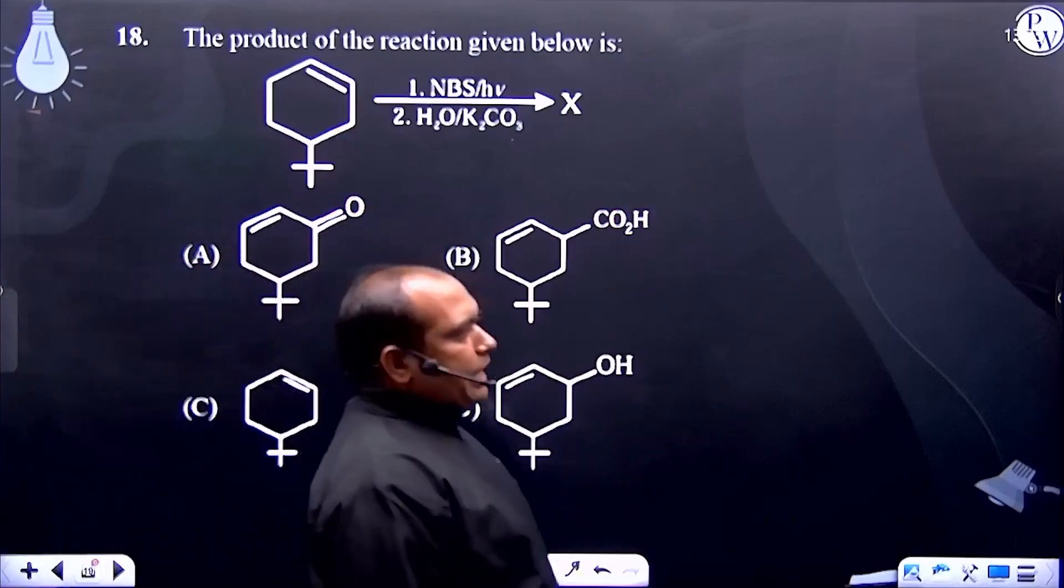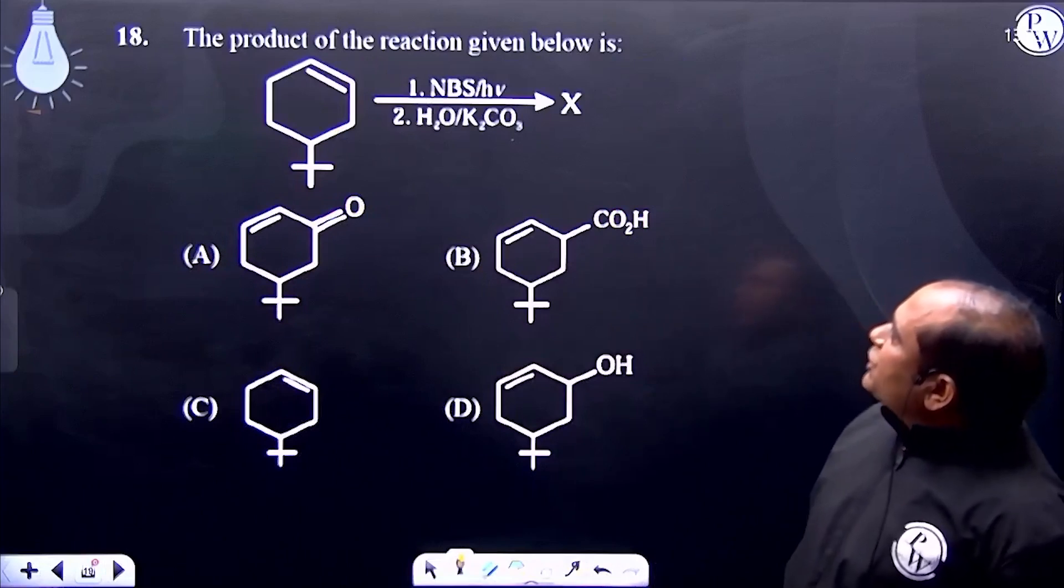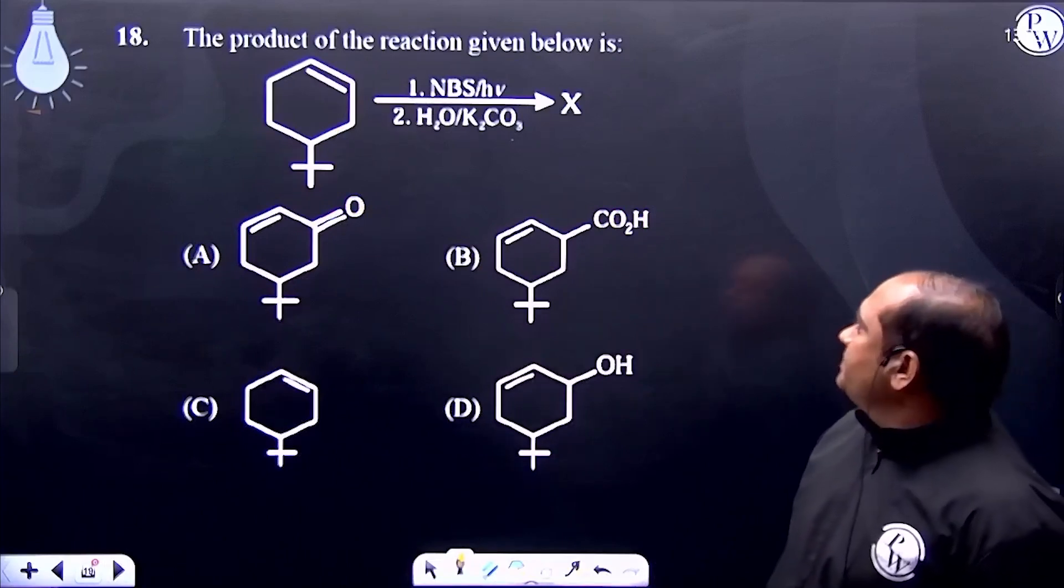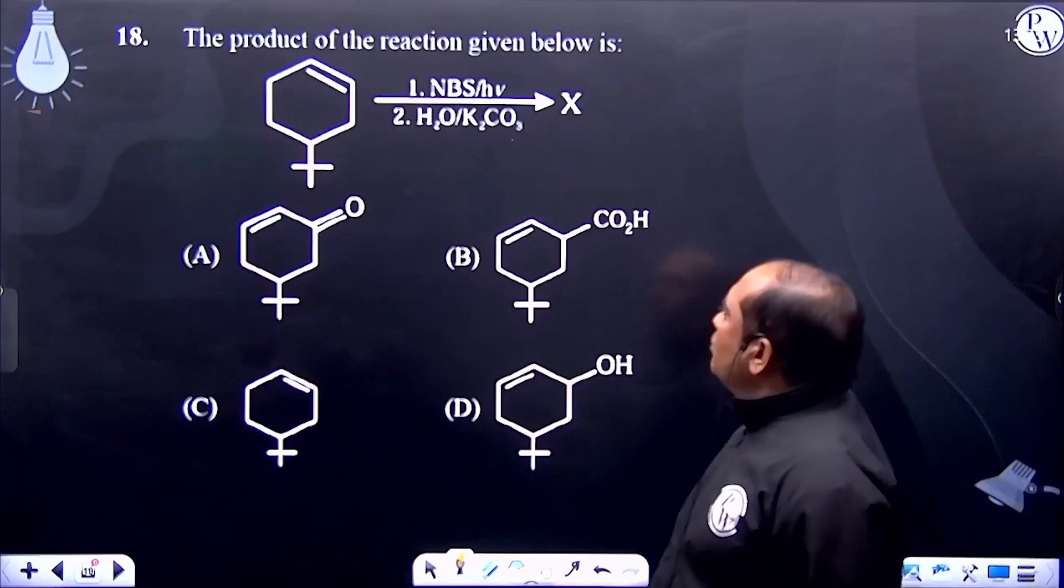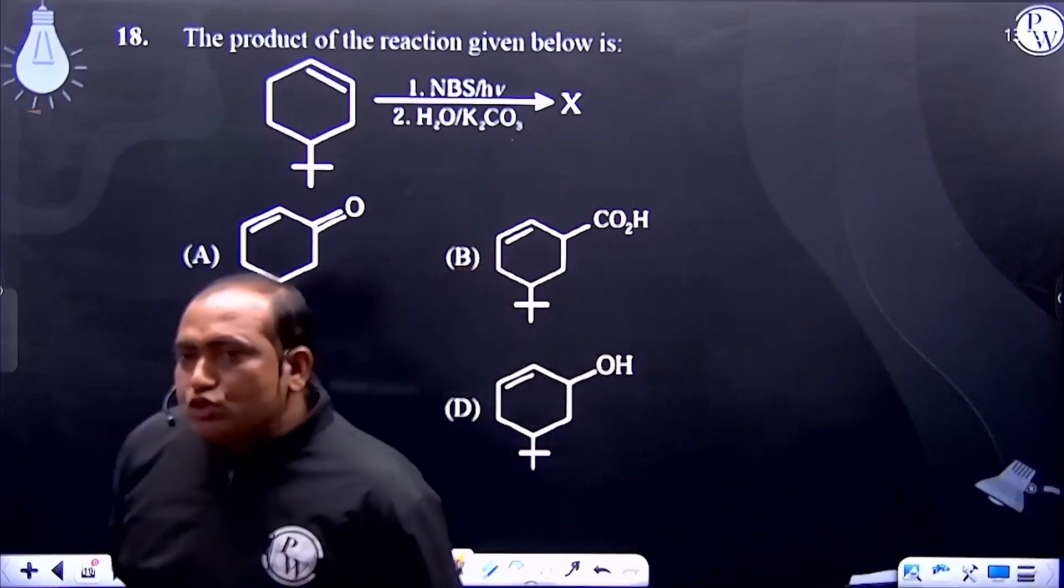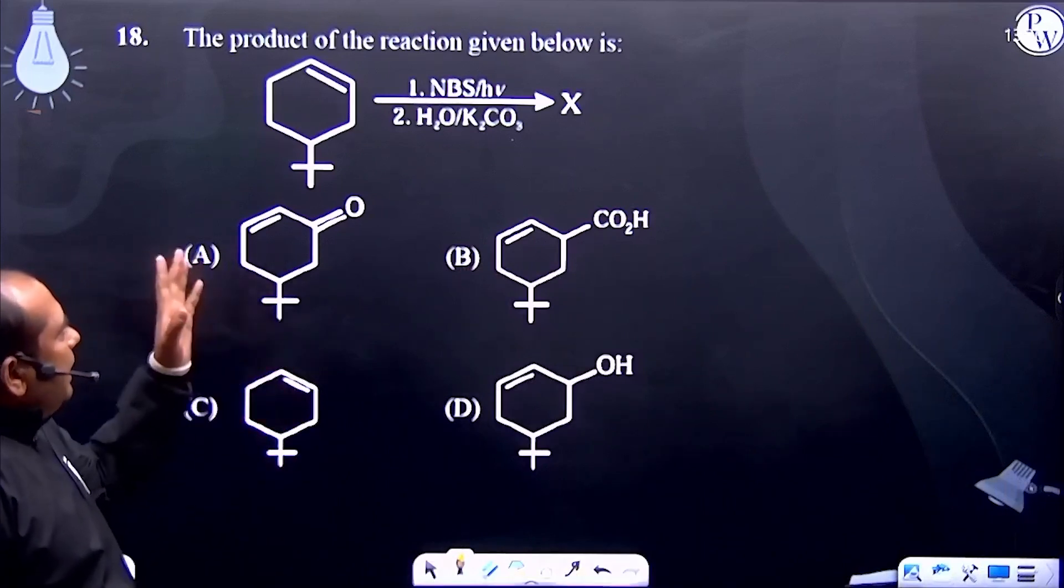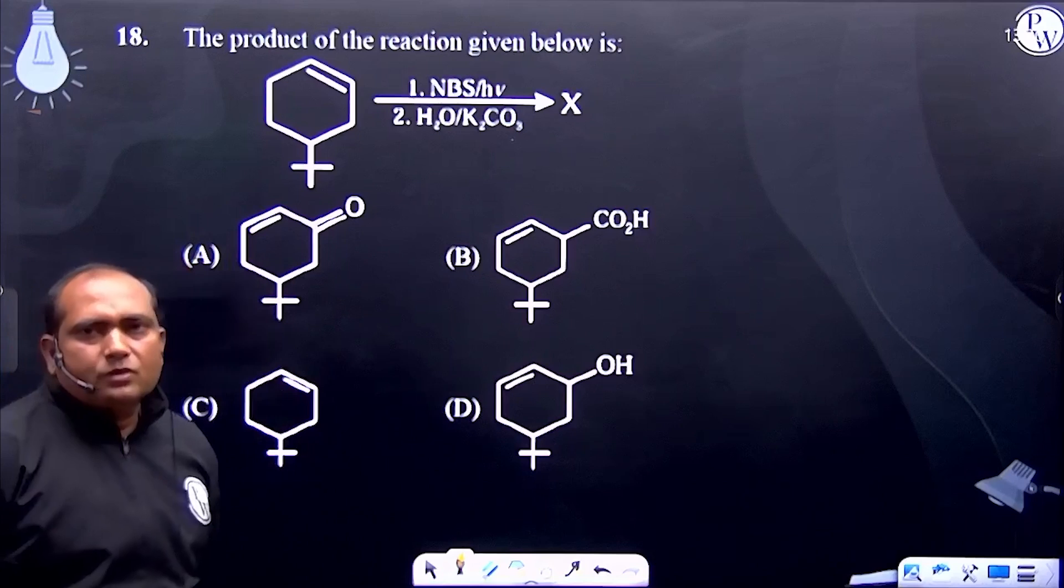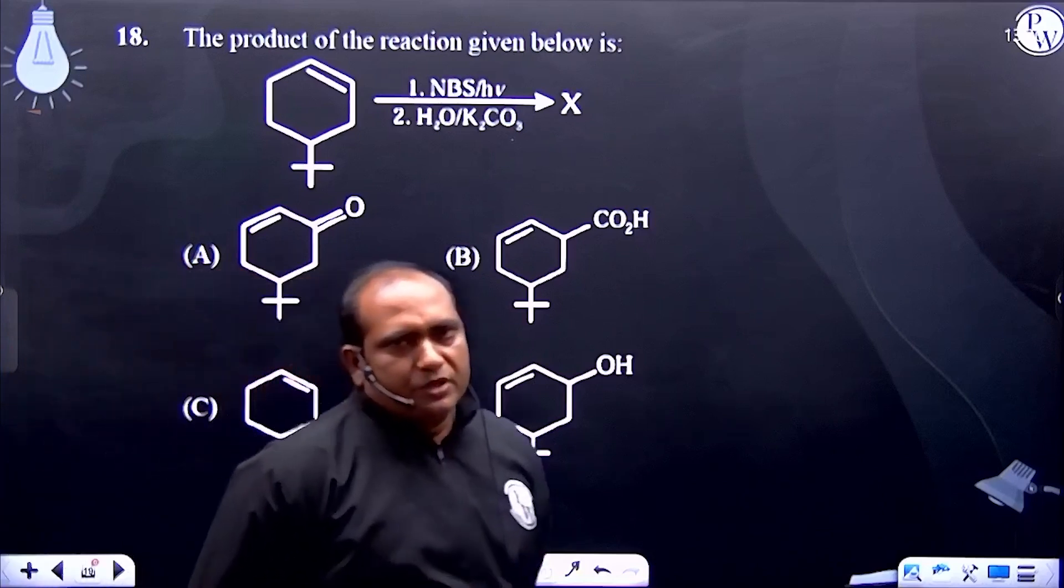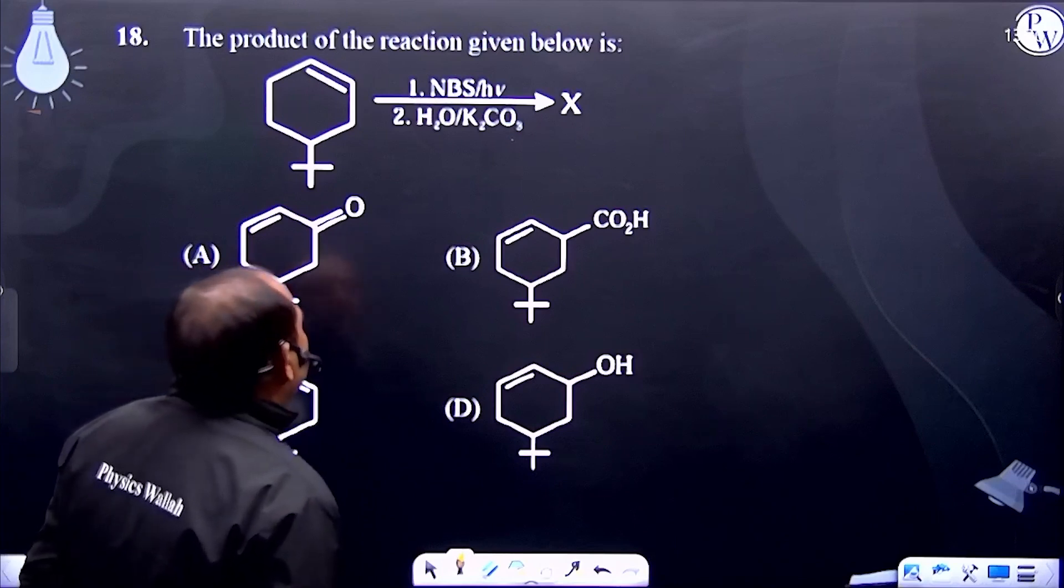Question number 18: the product of the reaction given below. NBS - do you know what is NBS and what is the property of NBS? It halogenates allylic or benzylic position. And in this question which position is allylic?